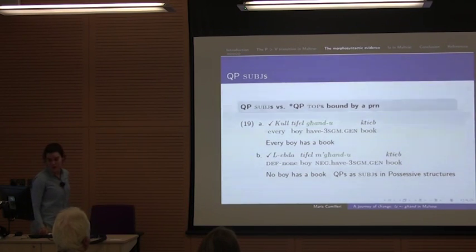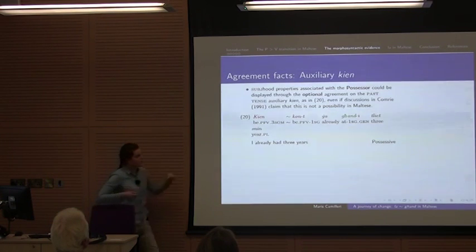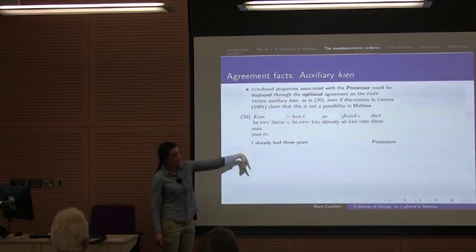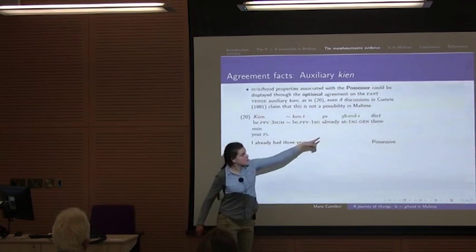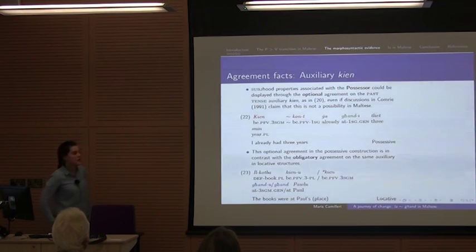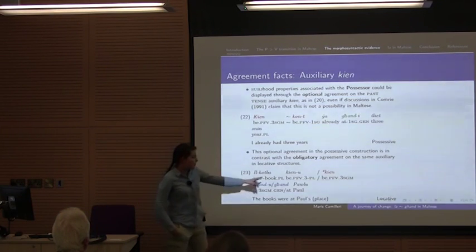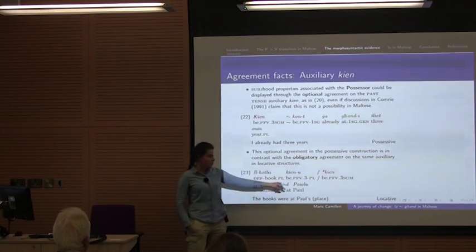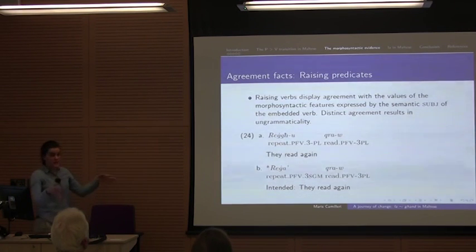Another fact: agreement with the auxiliary 'kien'. The use of 'and' in its possessive use allows us to get either default agreement on the past tense auxiliary or agreement with the possessor — as opposed to what we get in classical Arabic, which is agreement with the theme. This is different from the obligatory agreement which you get on the same auxiliary in a locative structure, where agreement must be with the real subject — the theme — so you get 'kienu' because 'kotba' is plural, yielding plural agreement. This is another difference between the two constructions, and a further difference is the agreement effects on raising predicates.